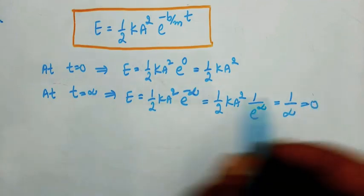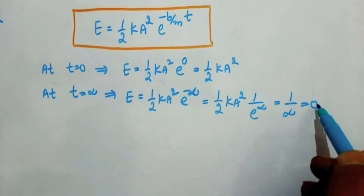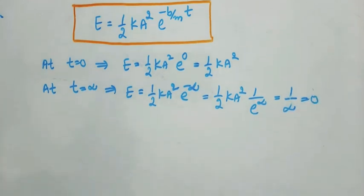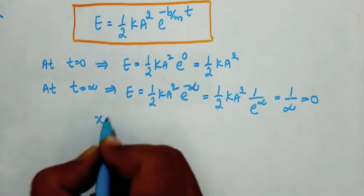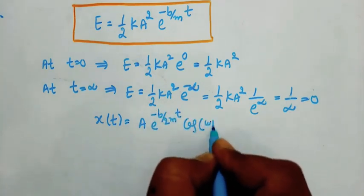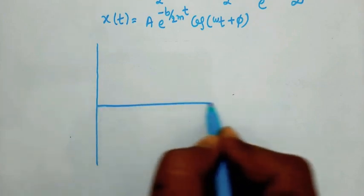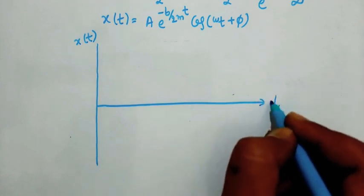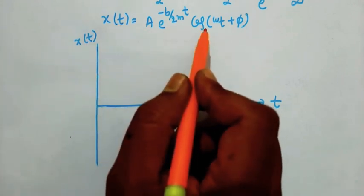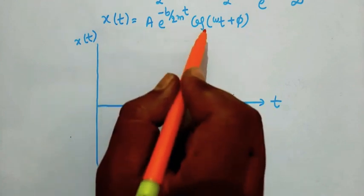When time tends to infinity, energy tends to 0. After some time, the energy decreases, and when it reaches the mean position, the energy becomes 0. We have the equation x(t) equals A e to the power of minus B by 2M into t, times cos(omega t plus phi). Here I draw a graph of x(t) versus time. The function x(t) is both an exponential function and a cosine function, so the displacement is exponentially decreasing and it is a periodic function.